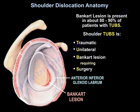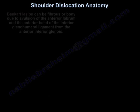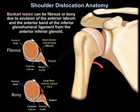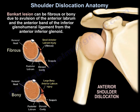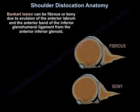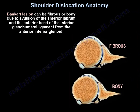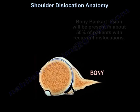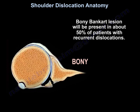TAPS is traumatic unilateral. Bankart lesion requires surgery. Bankart lesion can be fibrous or bony due to avulsion of the anterior labrum and the anterior band of the inferior glenohumeral ligament from the anterior inferior glenoid. Bony Bankart will be present in about 50% of patients with recurrent dislocation.